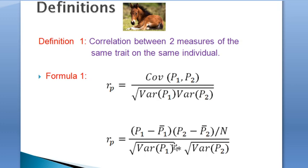A repeatability has two definitions and with two corresponding formulas. Firstly, the repeatability is defined as the correlation between two measures of the same trait on the same individuals and given by the formulae. Rp for repeatability of p is equal to covariance p1, p2 over the product of the square root of their variance.